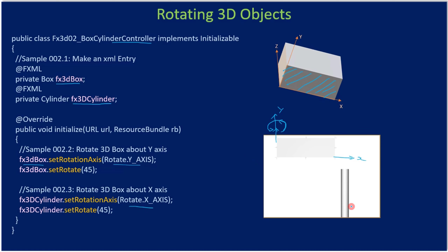For the cylinder, we specify setRotationAxis X. The reason is that the cylinder is oriented along the Y direction. If you rotate it in the Y direction, since it's a cylinder you won't see any difference. We want to see the ZX plane, so we rotate it about the X axis to see the top of the cylinder — the radius becomes visible.